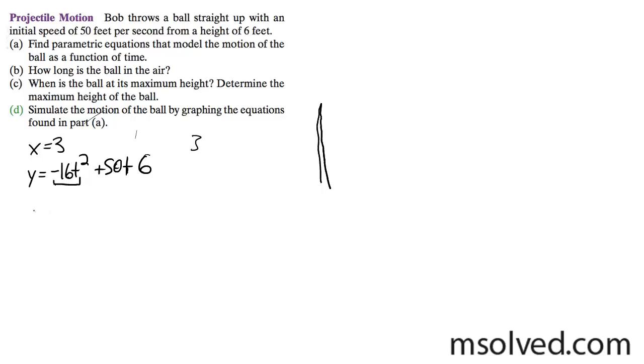Next, when is the ball at its maximum height, what you'll do is you'll just find on a graph where it's highest. So in this case, for part, excuse me, that's for part C. For part B, it's in the air 3.24 seconds.